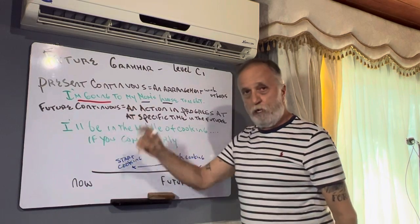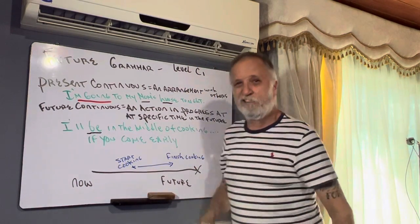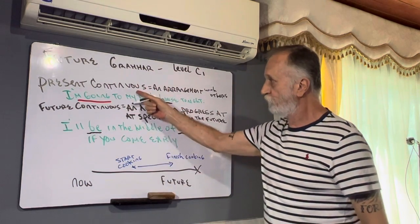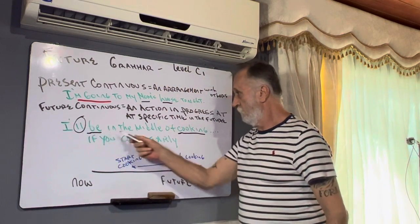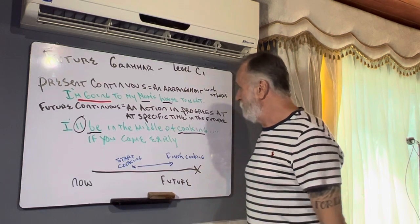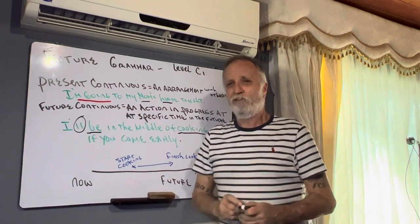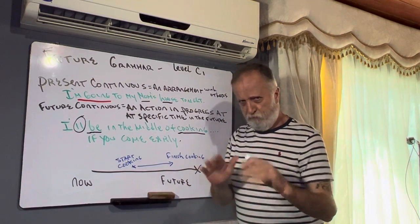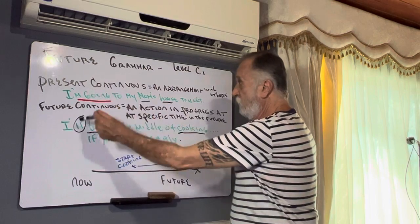Check this one. Future continuous. Of course, it has the verb to be because it's continuous. You know that. And it has cooking verb with I-N-G because it's continuous grammar. We know that will makes it the future. Future continuous. An example would be, Papi, I'll be in the middle of cooking for you if you come early. Present continuous. Future continuous.